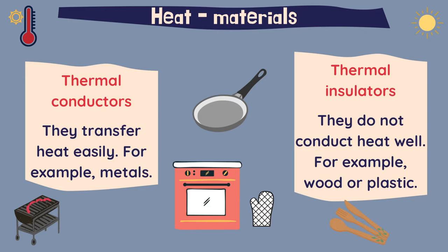And on the other hand, we have thermal insulators — they do not conduct heat well. For example, wood or plastic. That is why we have wooden spoons, forks, or knives in the kitchen, so you can cook without getting your hands really hot. And the saucepan has both conductors and insulators: it has the circular base made of metal to transfer heat easily, and the handle is usually made of plastic or wood because we need an insulator there.